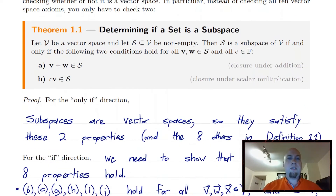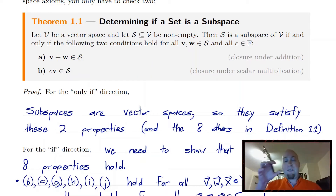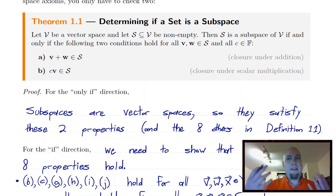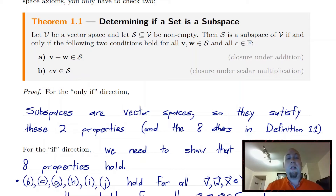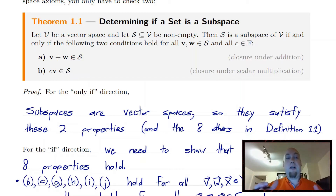Suppose you've got a set V that you already know is a vector space, and a non-empty set S within V. You can determine whether S is a vector space — in other words, whether it's a subspace — just by checking two of those 10 defining properties. The only two properties you have to check are closure under addition and closure under scalar multiplication. If those two properties hold, then all of the other vector space properties hold, and S must itself be a vector space as well.